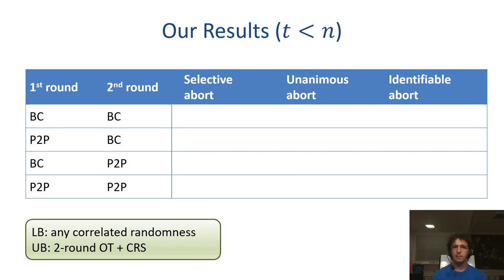First, if both rounds are computed over a broadcast channel, we show that the original protocols of Garg-Srinivasan and of Benhamuda-Lin, that only claimed security with unanimous abort, can be easily extended to achieve identifiable abort and catch cheating parties.